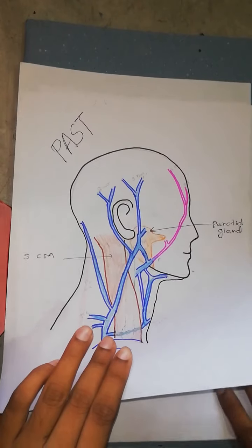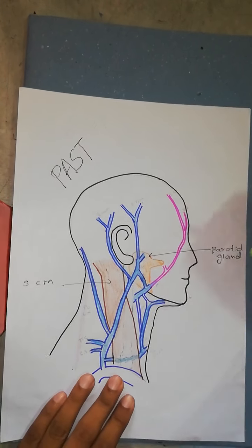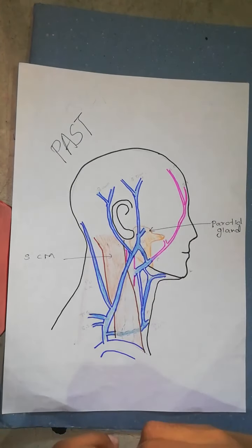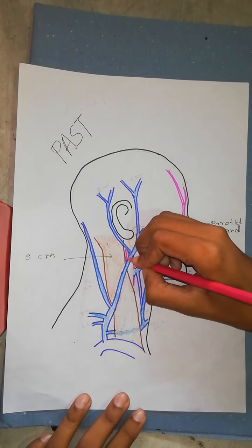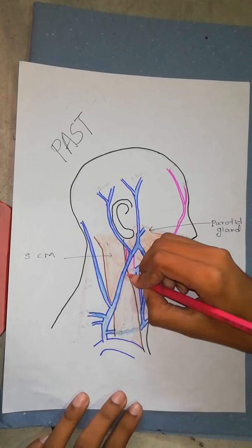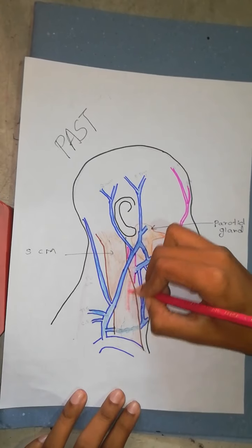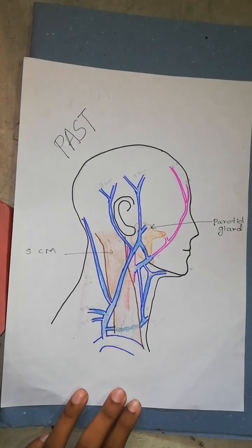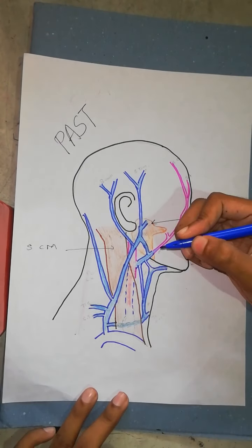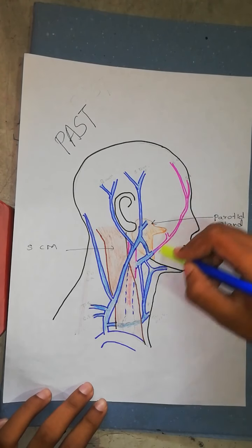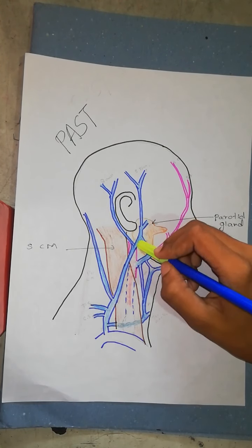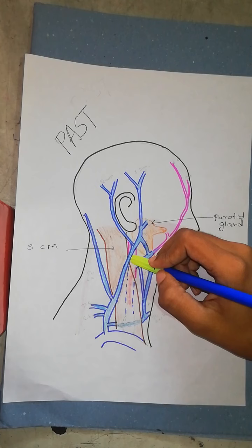Let's go to the first picture and complete it with the internal jugular vein. The internal jugular vein is posterior to the parotid gland and also comes posterior to the sternocleidomastoid. You can see it receives a tributary — this is the common facial vein. The internal jugular vein receives blood from the brain, face, and neck.